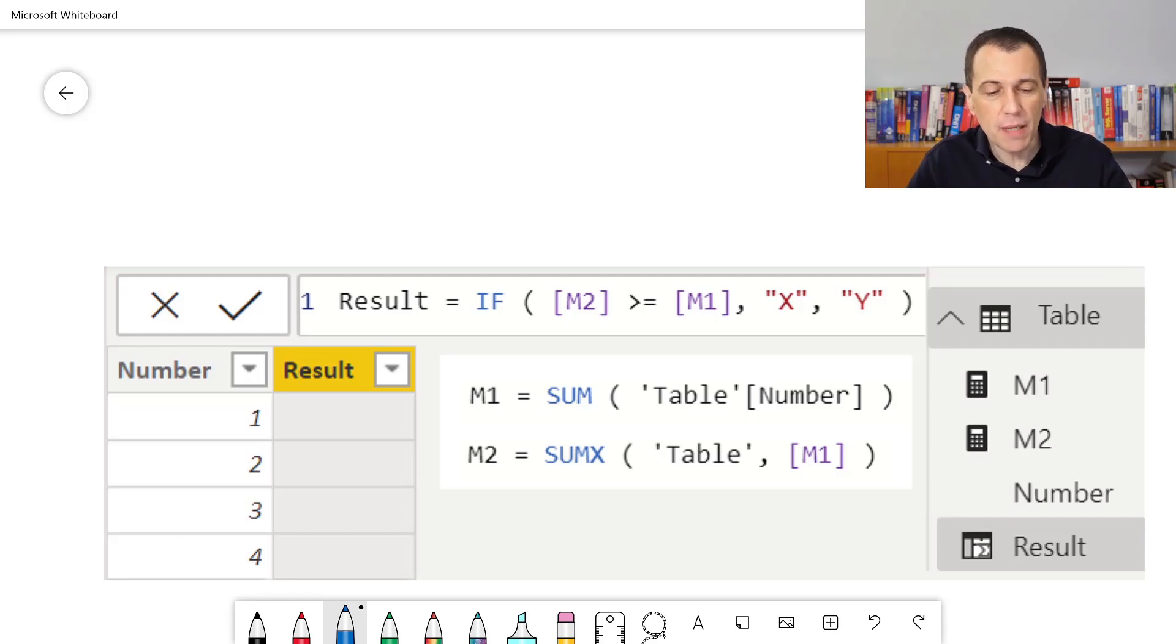The problem is, we have this table with just one column number and we create a new calculated column named result with the expression you see. In the model, we also have two measures, M1 and M2.